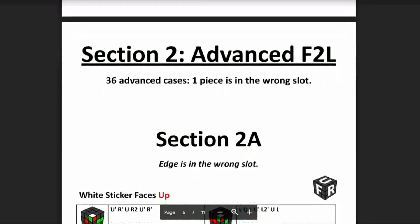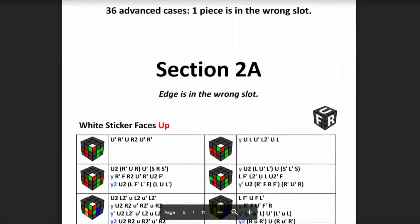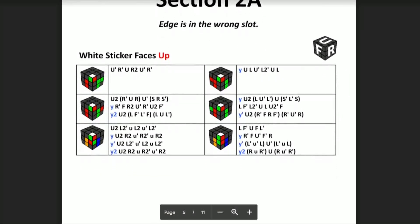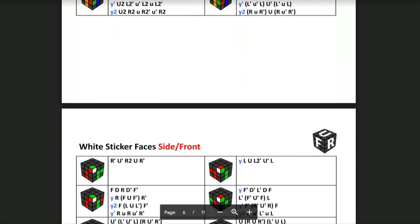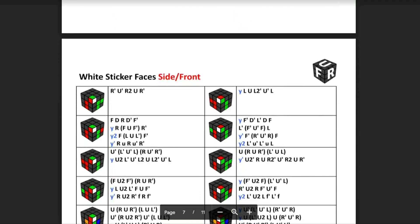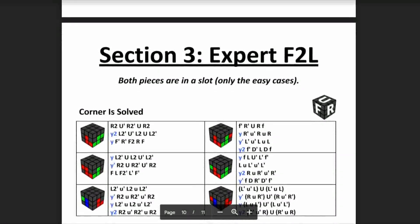Section two is where one of the pieces can be in the wrong slot, and this is what I call advanced F2L. I have a video just for advanced F2L. The basic idea is that when you take a piece out into the top, you want to make sure it immediately pairs with the other piece.